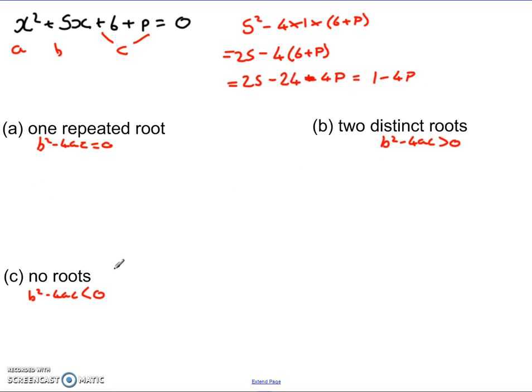Now I have to look at each of these conditions. For one repeated root, b squared minus 4ac equals 0. So in this case, I know 1 minus 4p equals 0. So I can then just do basic algebra. I know 4p equals 1, so p equals a quarter. So if p was equal to a quarter in this function originally, I would get one repeated root from the quadratic.